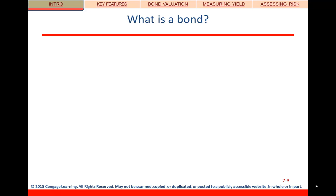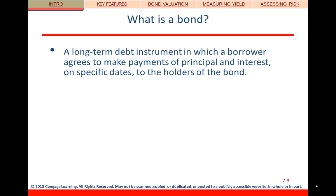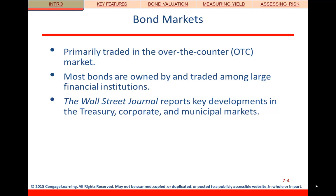Let's start this discussion by talking about what exactly is a bond. A bond is a long-term debt instrument — we call it a fixed income security — where the issuer or borrower is agreeing to make payments of principal and possibly interest on specific dates to the holders of the bond, and these bonds are traded in bond markets.